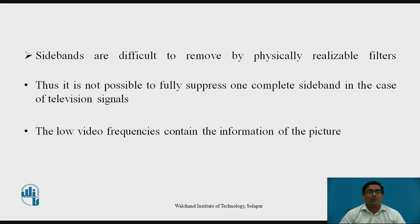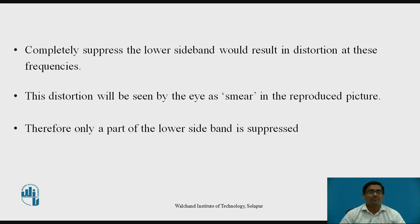Therefore, the low video frequency contains the information of the picture. Completely suppressing the lower sideband would result in distortion at these frequencies. This distortion is seen by the eye — it is called CMR in the reproduced picture. Therefore, only part of the lower sideband is suppressed. You cannot suppress the full lower sideband; you suppress only a few parts of the lower sideband.